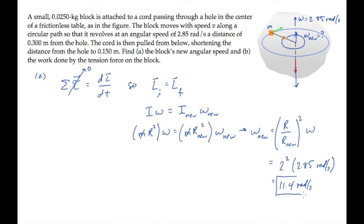Part B asks us for the work done by tension on the block as the circle's radius is cut in half. We'll find this using the work kinetic energy theorem. Work done by all forces is the change in kinetic energy. Tension is the only force doing work, so that equals the change in the rotational kinetic energy.